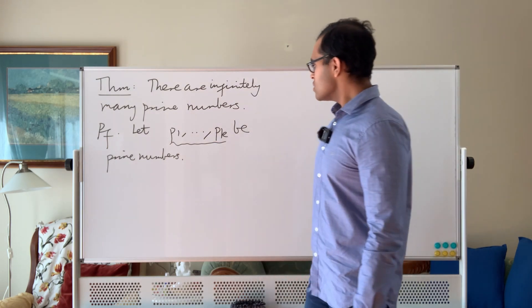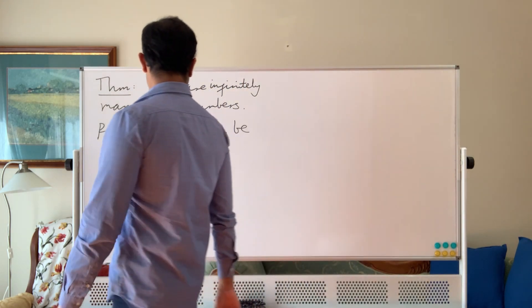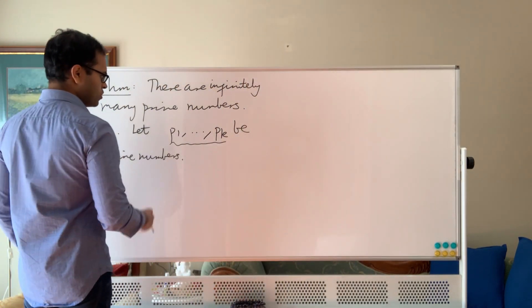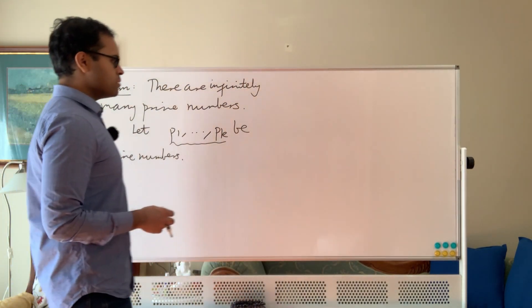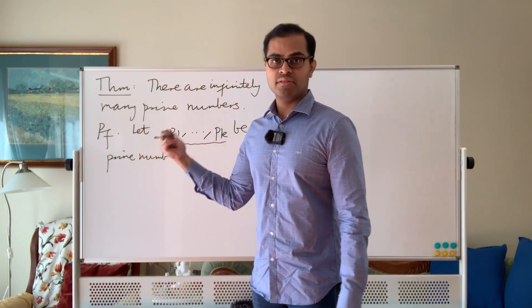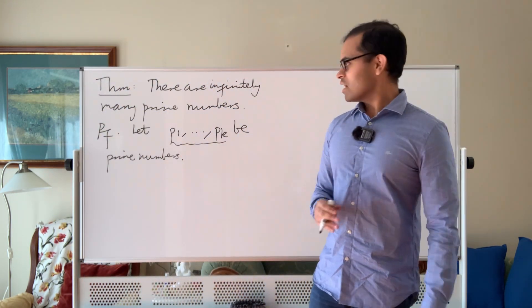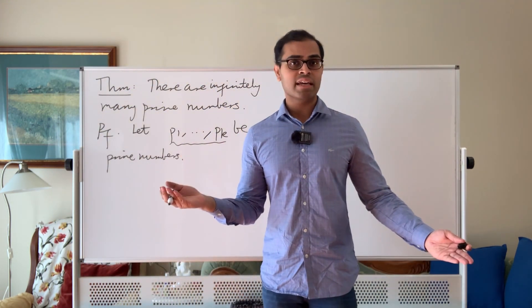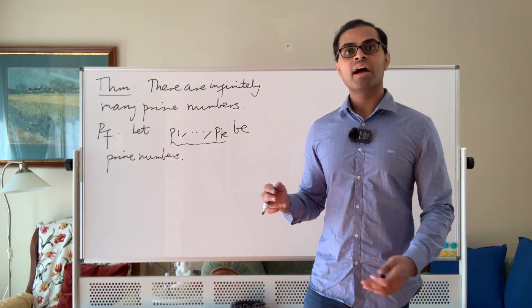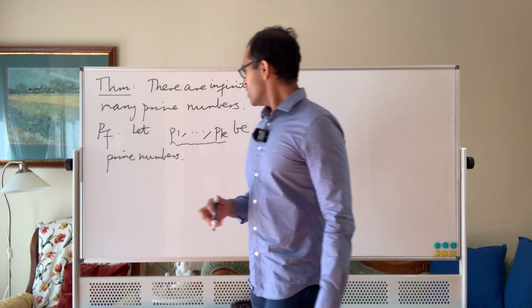So how are we going to do this? The way Euclid did this is we're trying to create some number that maybe isn't divisible by any of these. Here's the trick: let's just multiply them all together, that would contain every one of these as a factor, and then just add one.